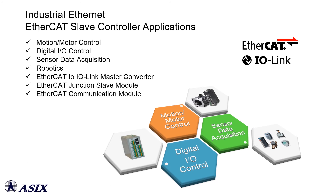The AX58100 EtherCAT Slave controller is suitable for motor motion control, digital I/O control, sensors data acquisition, robotics, EtherCAT IO-Link Master, EtherCAT Junction Slave module, and other industrial automation applications.